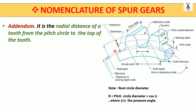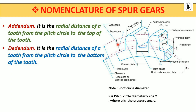Dedendum is the radial distance from the pitch circle to the bottom of the tooth. So in addendum and dedendum, both are directly or indirectly related to the pitch circle: from pitch circle to top is addendum, and from pitch circle to bottom of the tooth is dedendum. In between addendum and dedendum lies the pitch circle — that imaginary circle.